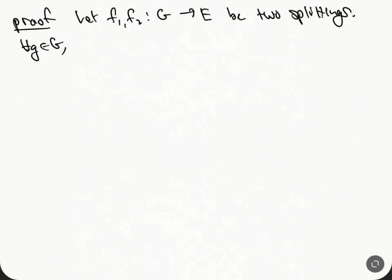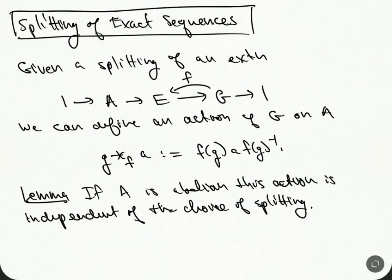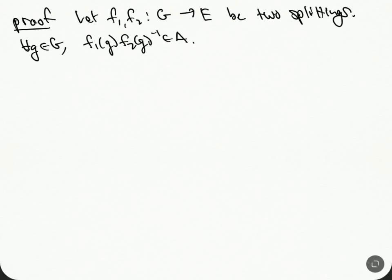Proof: let F₁ and F₂ from G to E be two splittings. Then for all g in G, we have that F₁(g)·F₂(g)⁻¹ is in the kernel of the projection back down. The kernel is here. So when you project back down, they both land to the same thing. They both land to g. So they're in A.